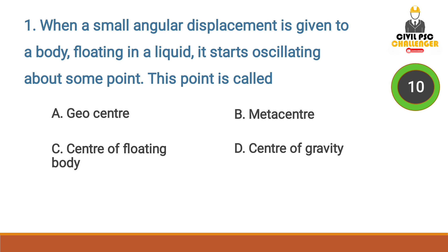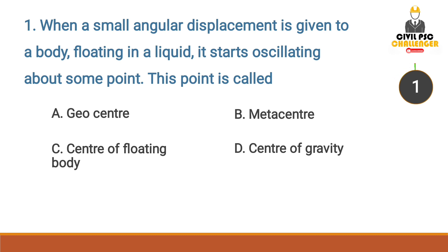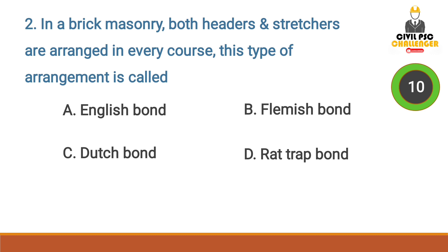When a small angular displacement is given to a body floating in a liquid, it starts oscillating about some point. This point is called — Answer option B: Metacenter. When a small angular displacement is given to a body floating in a liquid, it starts oscillating about some point. This point is called a metacenter.